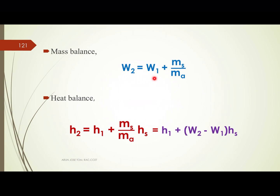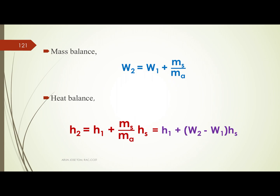From mass balance: W2 = W1 + (MS / MA). From heat balance: H2 = H1 + (MS / MA) × HS. This can also be written as H2 = H1 + (W2 - W1) × HS.